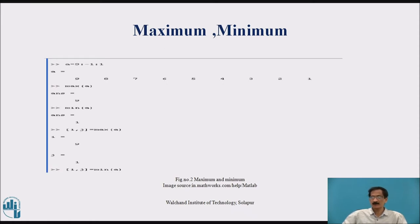Here A is equals to 9 colon minus 1, 1. This command will give the output as 9, 8, 7, 6, 5, 4, 3, 2, 1. Total equals to 3 plus 3 plus 3, total 9 numbers with a step of minus 1. So, the first number will be 9 and last will be 1.